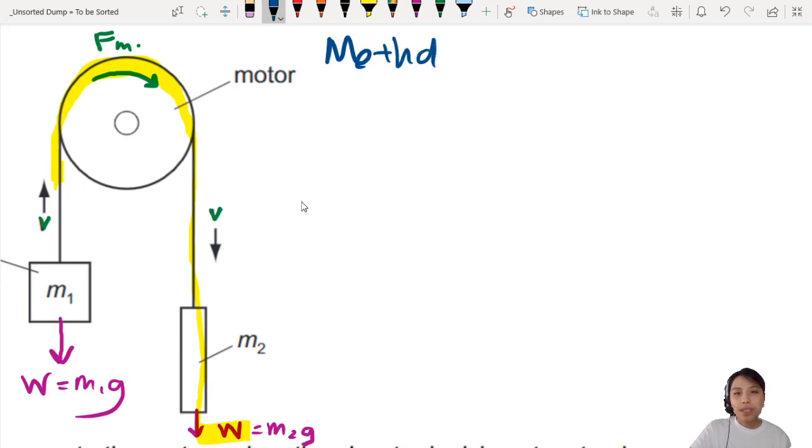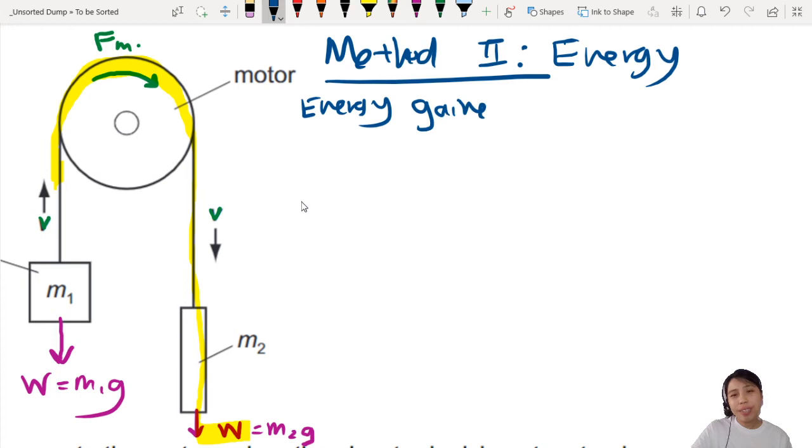So method two is thinking about conservation of energy. What are the energy changes that is happening in this whole system? You can create an equation. What are the energy gains and what is the energy loss kind of thing? And you create an equation.